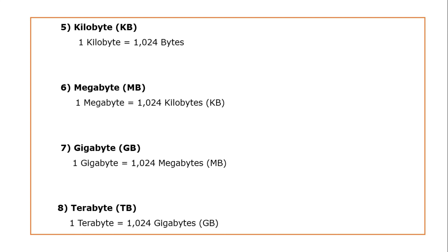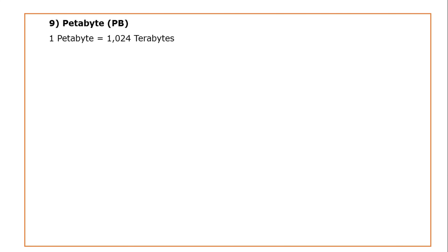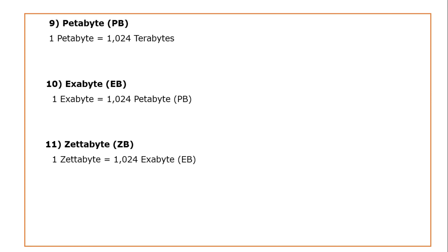The next one is a terabyte, that is TB. 1 terabyte is equal to 1024 gigabytes. Next one is a petabyte, that is PB — 1 petabyte is equal to 1024 terabytes. Next one is an exabyte, that is EB — 1 exabyte is equal to 1024 petabytes. Next one is a zettabyte, that is ZB — 1 zettabyte is equal to 1024 exabytes.